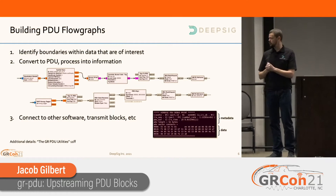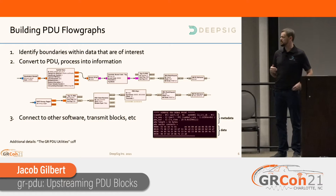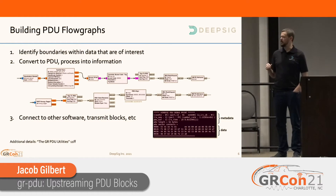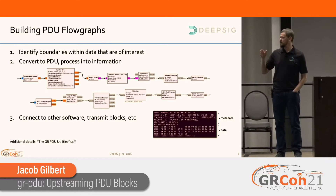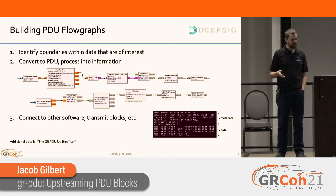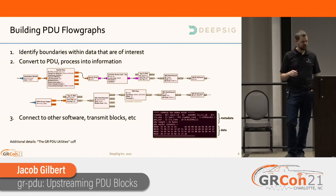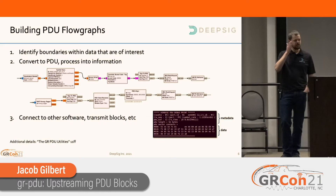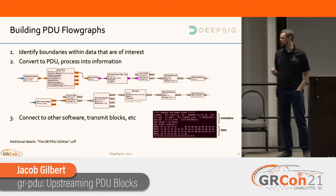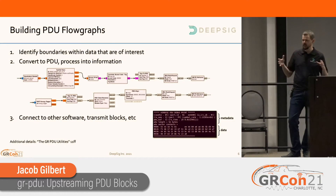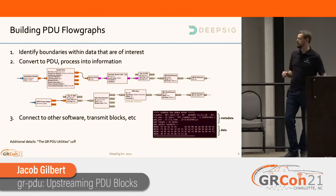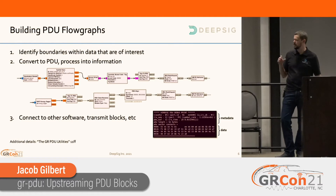Building flow graphs - the general process for working with PDUs, or building applications that rely on this method of processing, is to find a way to convert your streaming data, which most sources are going to provide, to tag features in that data and use one of the entry blocks like the tags-to-PDU block to aggregate the streaming data, put it into a PDU, and pass that out for downstream processing.